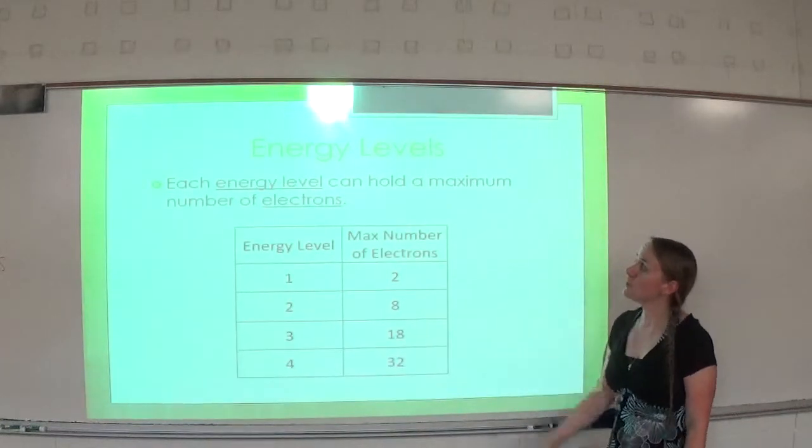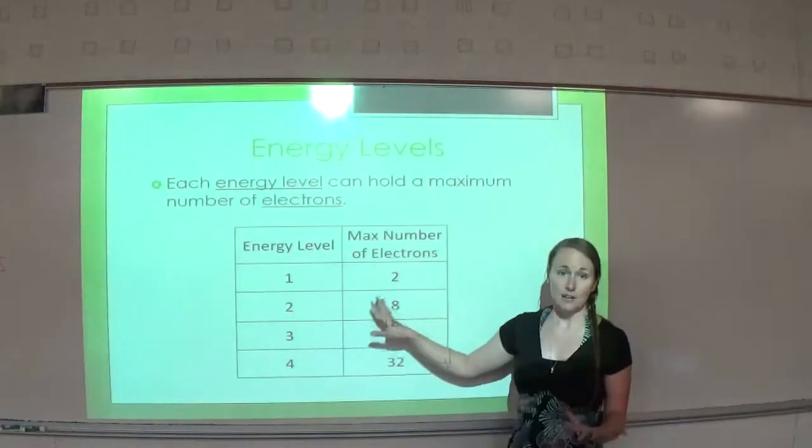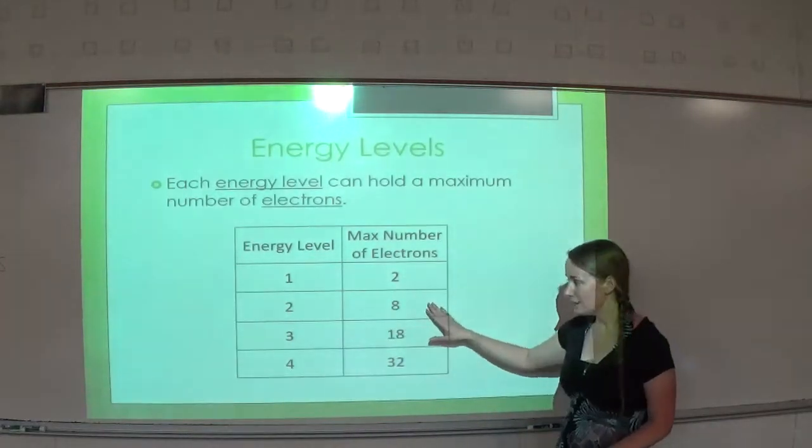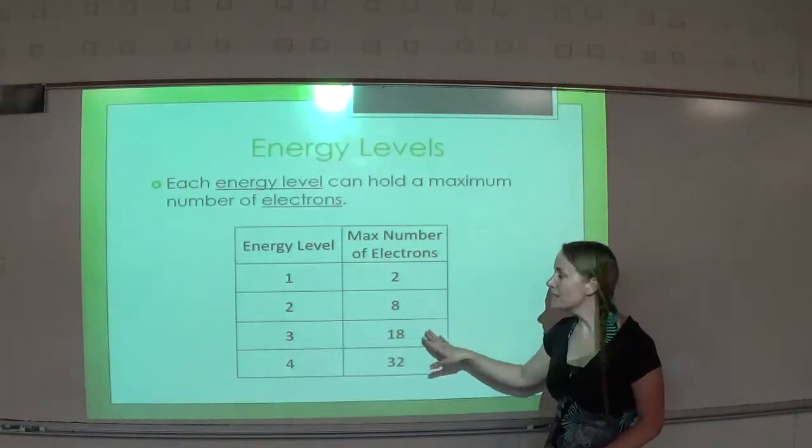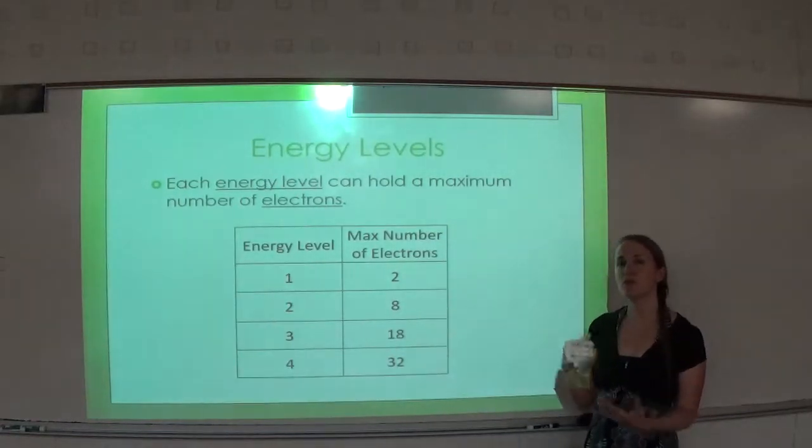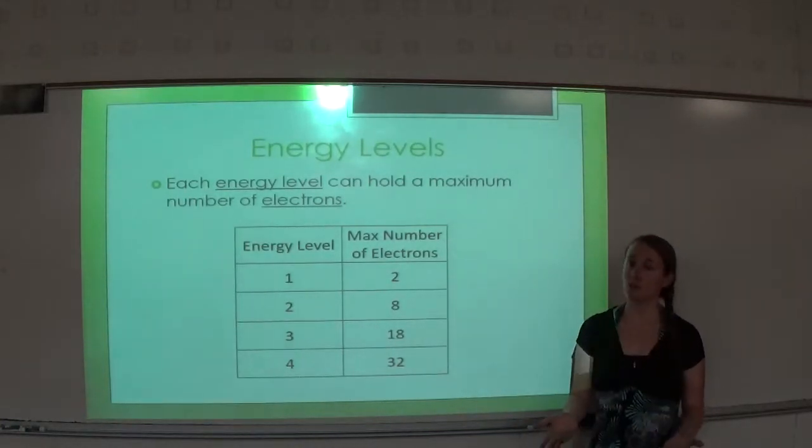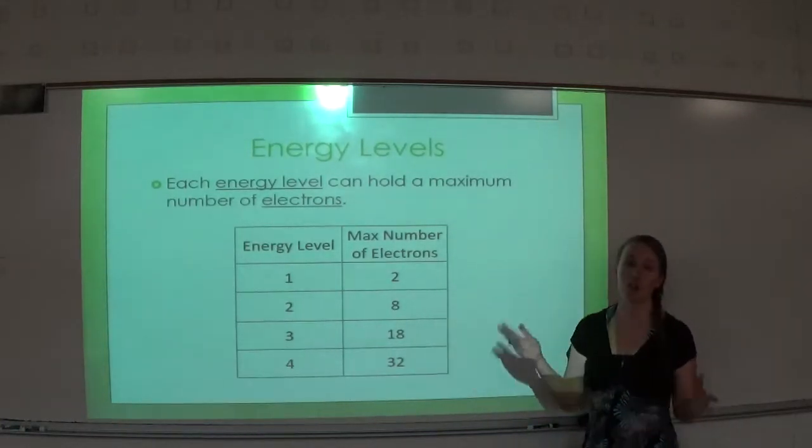Each energy level can hold a maximum number of electrons. The first energy level can hold up to two electrons. Then you have to move on to the second one, which can hold eight. The third one can hold 18, and the fourth one can hold 32. If you move on to chemistry, we'll go into the most accepted modern form of the atom, which is the quantum mechanical model, and we'll break this down a little bit further.